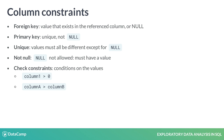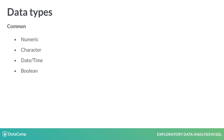Constraints can limit the values in a column, but the main thing that determines what values are allowed is the column's type. Each column in the database can only store one type of data. In this course, we're talking about three of the most common types of data: numeric, character, and date time.